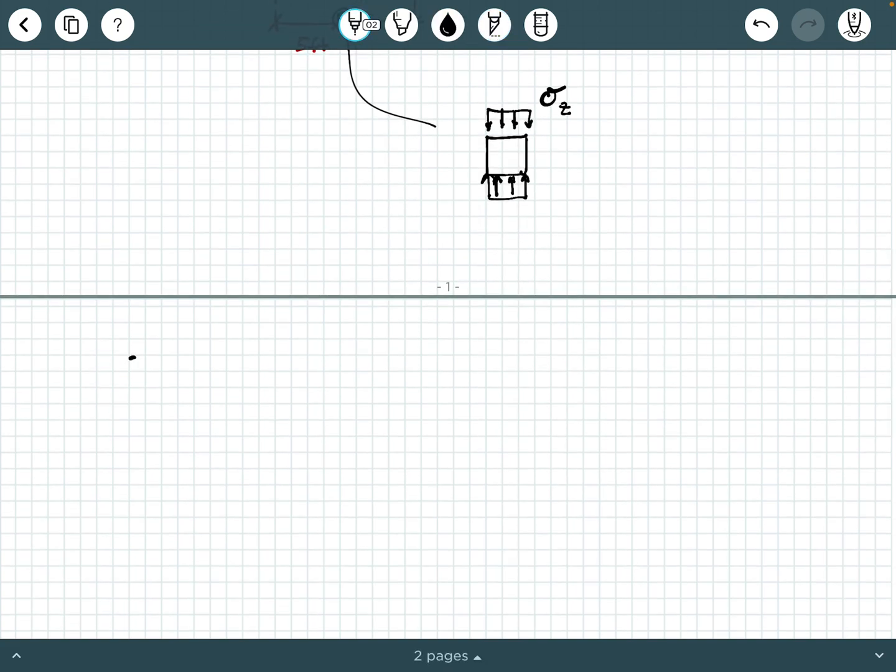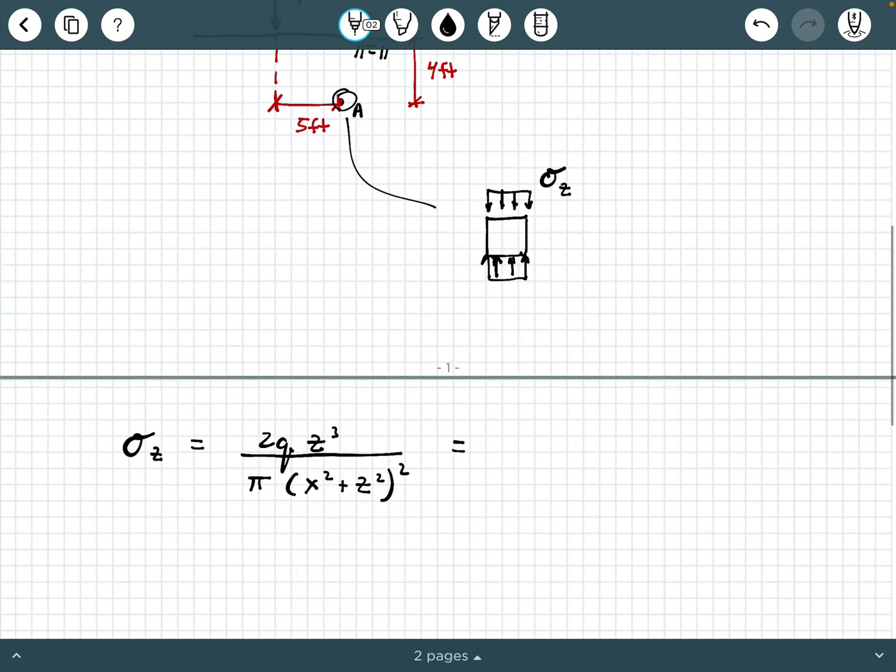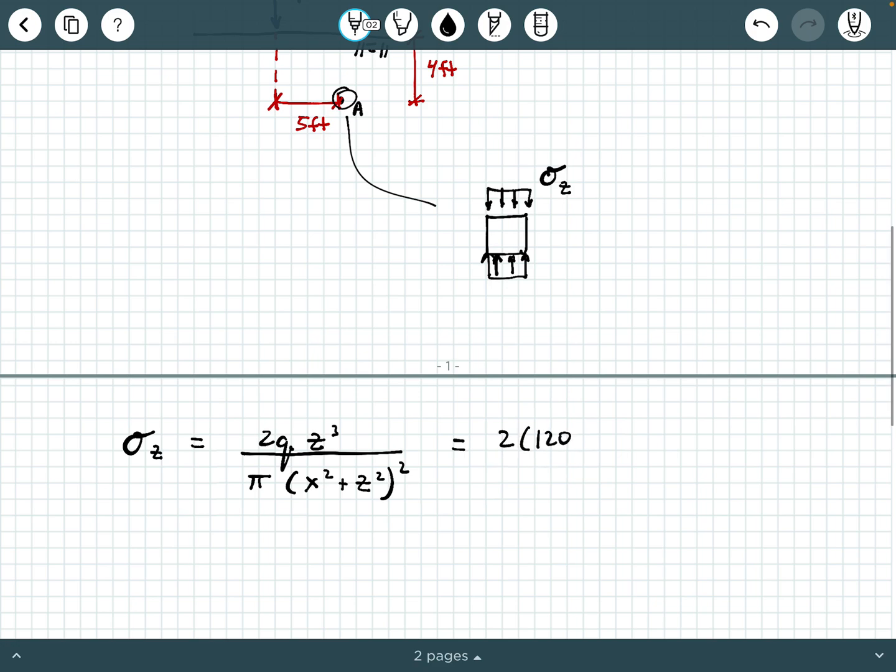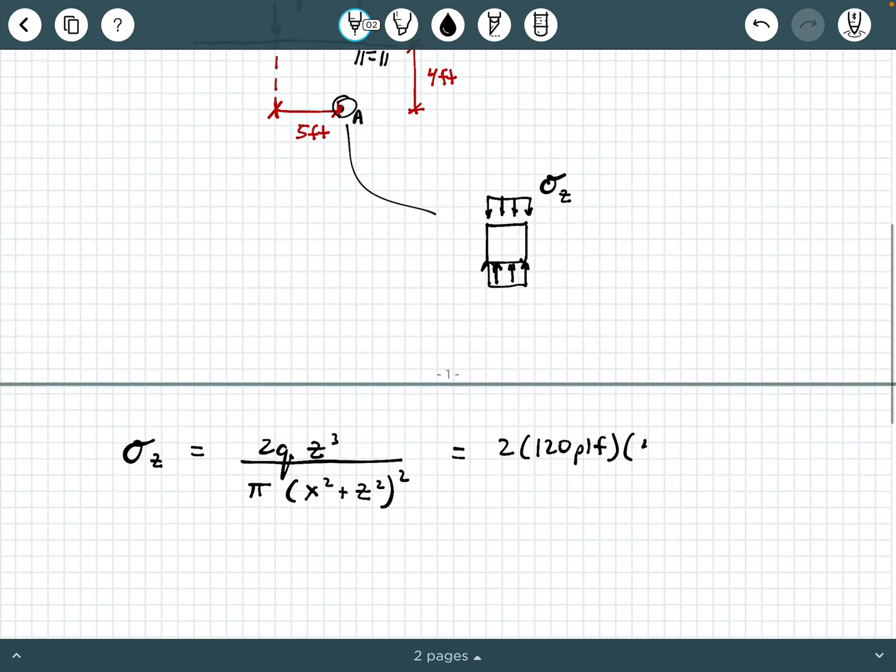And so we're going to say sigma sub Z equals 2QZ to the third power, all divided by pi times X squared plus Z squared, and then that quantity is squared. So if we substitute in our values, we're going to have 2 times 120 pounds per linear foot times the depth of 4 feet cubed, and then all divided by pi, open parentheses, and we're going to say 4 feet squared.